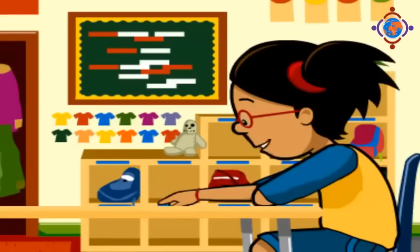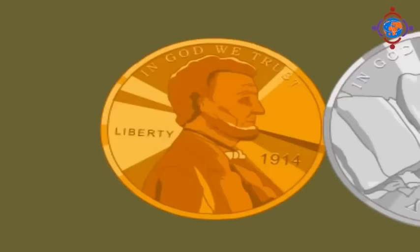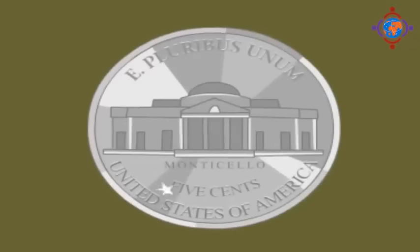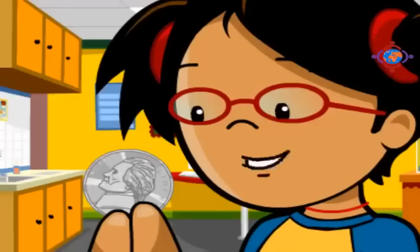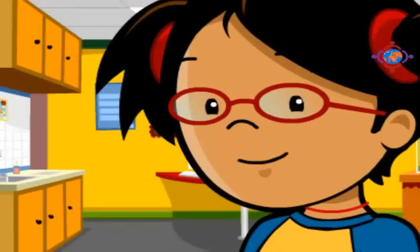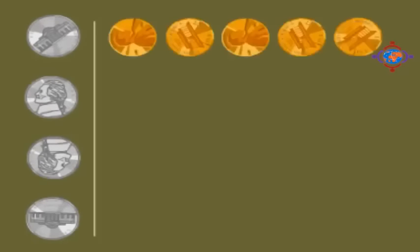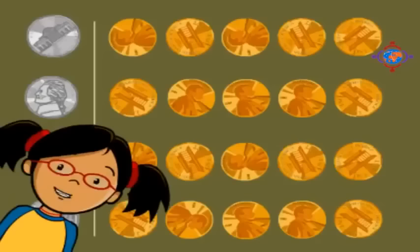But there are other coins here too. Here's a nickel. It's bigger than a penny and it's silver colored. There's another president on its head, Thomas Jefferson, and that's his home on the tail. A nickel is worth five cents — that means one nickel is equal to five pennies. We can count by fives to add the nickels. You have four nickels, so: five, ten, fifteen, twenty. We have four nickels, or 20 cents.